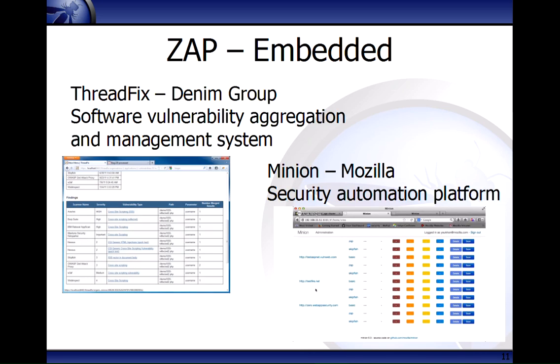I also want to quickly mention embedding ZAP in a larger program. A couple of tools worth mentioning are ThreadFix from the Denim Group and Minion from Mozilla — they're similar tools. ThreadFix is more aimed at the security team whereas Minion is more aimed directly at developers, though ThreadFix is also moving more towards developers. Both tools use ZAP and other tools, drive those, and then correlate the results and show trending and other useful statistics.